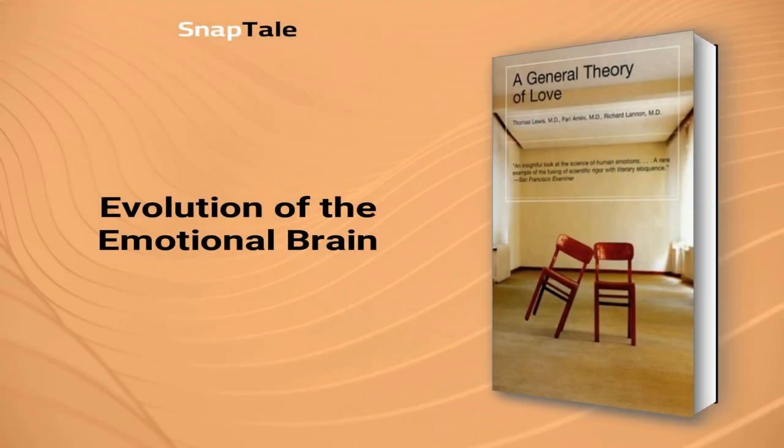Evolution of the Emotional Brain. Human emotions have been studied by scientists for centuries, and our modern understanding of the brain's evolution has played a key role in explaining our emotions and behavior. Our brain has three distinct sections which reflect its evolutionary journey: the reptilian brain, the limbic brain, and the neocortex. These sections influence our emotional responses and help us survive in new environments, form close social groups, and make well-reasoned decisions. Understanding this complex system can shed light on the surprising aspects of human behavior in relationships.